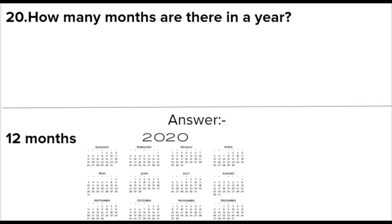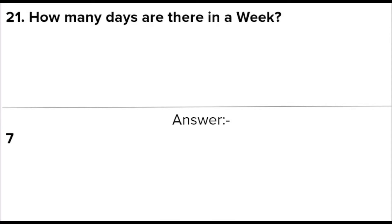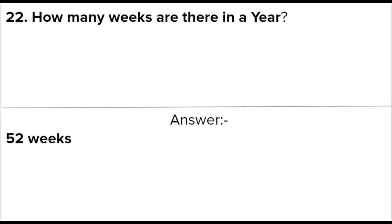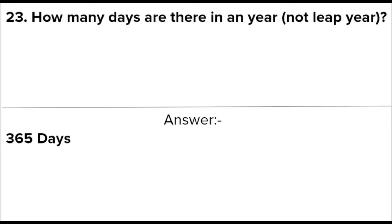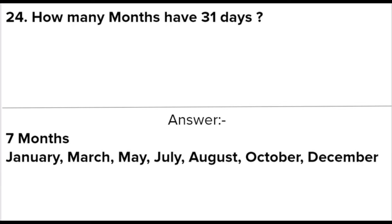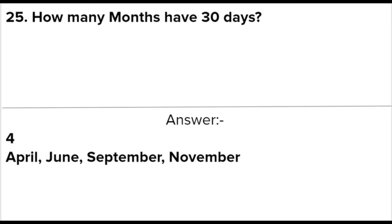Next question: How many months are there in a year? Answer: 12. Next question: How many days are there in a week? Answer: 7. Next question: How many weeks are there in a year? Answer: 52. Next question: How many days are there in a year (not a leap year)? Answer: 365. Next question: How many months have 31 days? Answer: Seven months — January, March, May, July, August, October, and December.